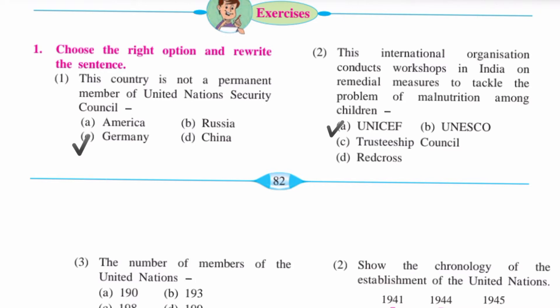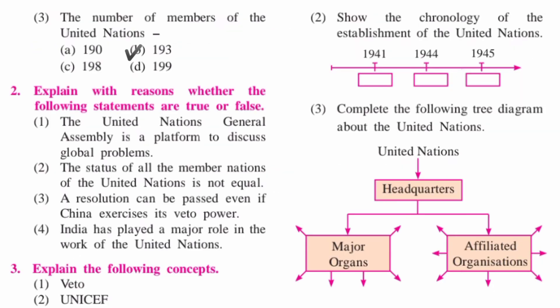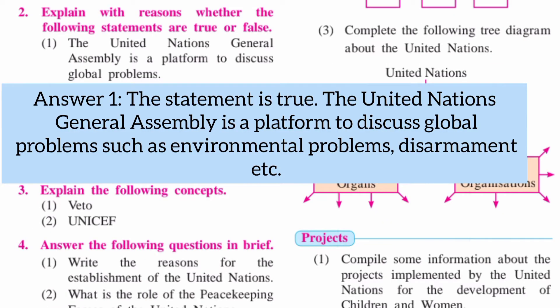Question Number 1: Choose the right option and rewrite the sentence. First: this country is not a permanent member of the United Nations Security Council — answer C, Germany. Second: this international organization conducts workshops in India on remedial measures to tackle the problem of malnutrition among children — answer A, UNICEF. Third: the number of members of the United Nations — answer B, 193.